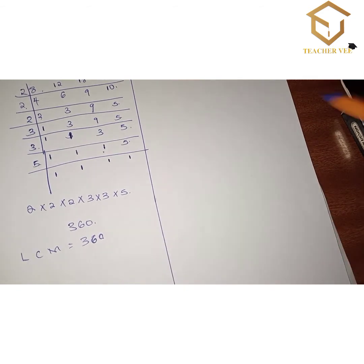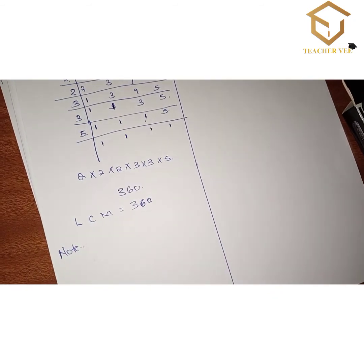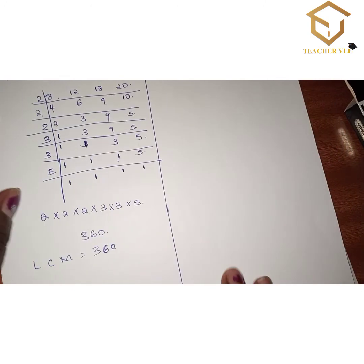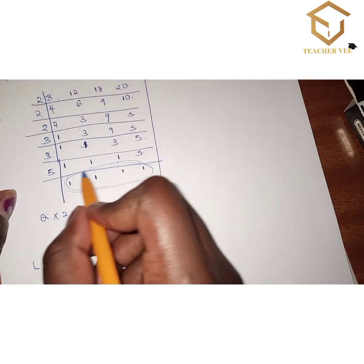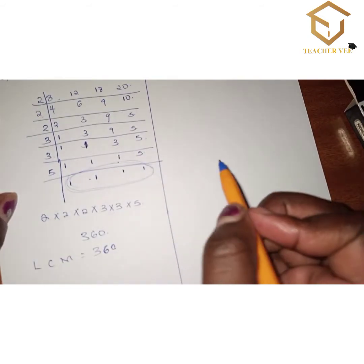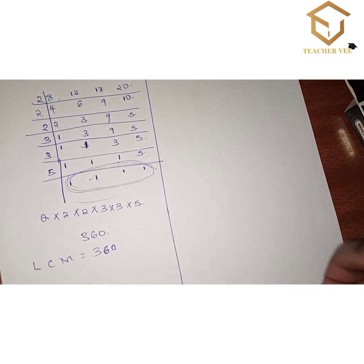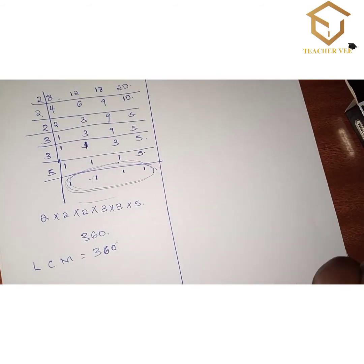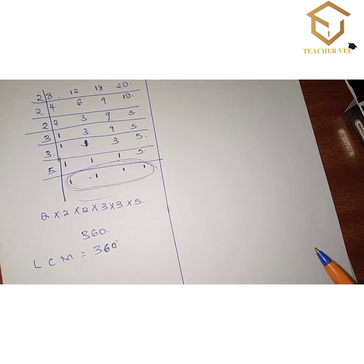Always note: unlike the GCD table, in the LCM table the remainder is always 1 — that's what you want to achieve. These numbers can divide 360 without any remainder. But for the GCD, the numbers divide leaving a remainder. That's the key difference you need to remember.